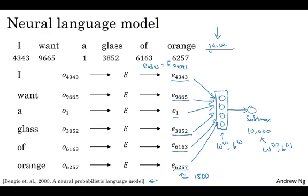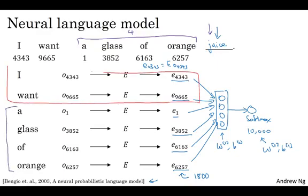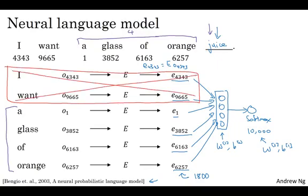Or what's actually more commonly done is to have a fixed historical window. So for example, you might decide that you always want to predict the next word given, say, the previous four words, where four here is a hyperparameter of the algorithm. So this is how you adjust for either very long or very short sentences where you decide to always just look at the previous four words. And so if you're always using a four word history, this means that your neural network would input a 1200 dimensional feature vector, go into this layer, then have a softmax, try to predict the output.